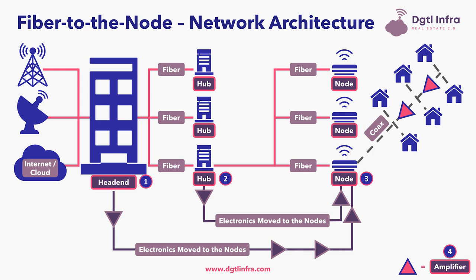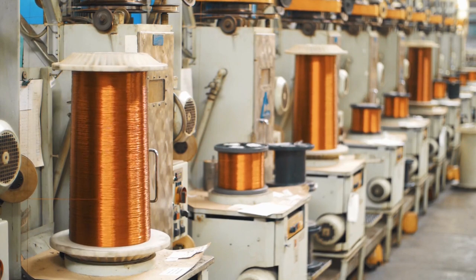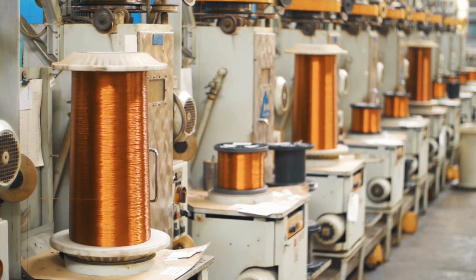The fourth component of fiber-to-the-node networks is the amplifier, signified by the pink triangles with dark blue borders. Amplifiers are located between the node and the home and are used to amplify the legacy signal that travels over copper.